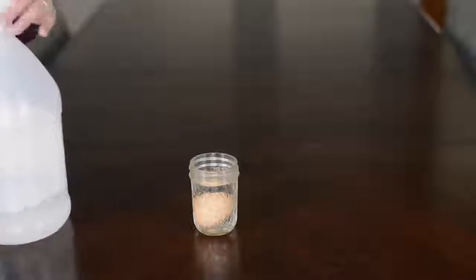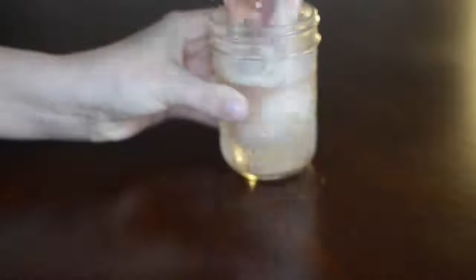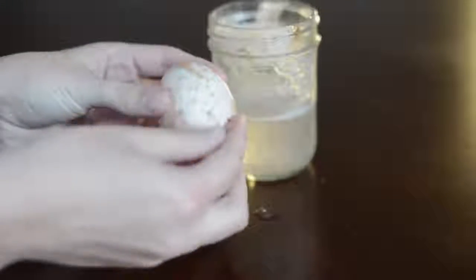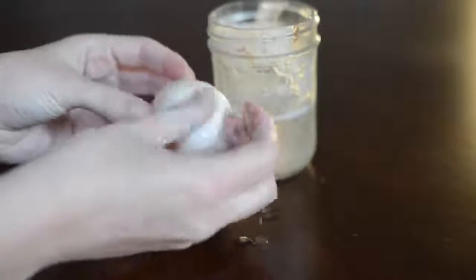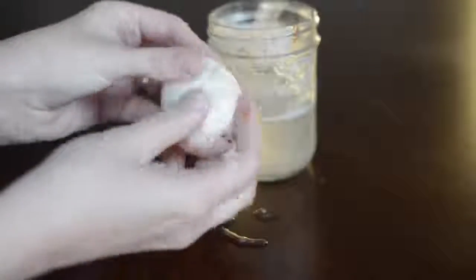And then you let it sit for 24 hours. And after the 24 hours has passed, you can take your egg out and you'll notice the shell will just kind of rub off. And what I did was I just went and ran it under some water. And there you have a bouncy egg.